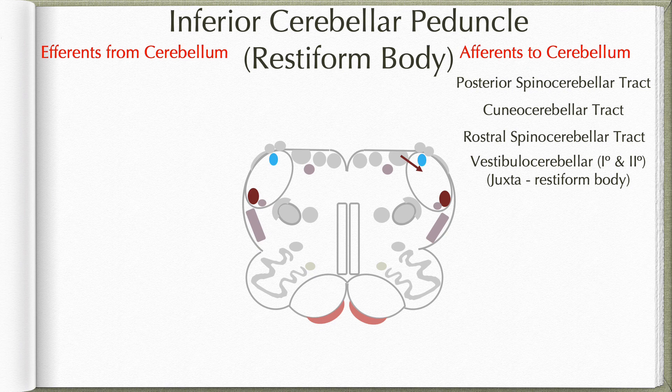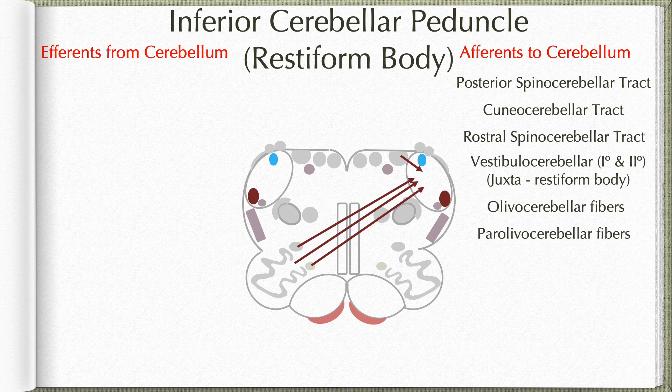Then we have a set of fibers coming from the contralateral inferior olivary nuclear complex. Fibers coming from the inferior olivary nucleus itself form the olivocerebellar tract, while those coming from the accessory nuclei form the paraolivocerebellar tract. The olivocerebellar and paraolivocerebellar fibers are the only climbing fiber input to the cerebellum, where they reach straight to the dendrites of the Purkinje cells in the cerebellar cortex. All others will be synapsing with the granular cells in the cerebellar cortex.